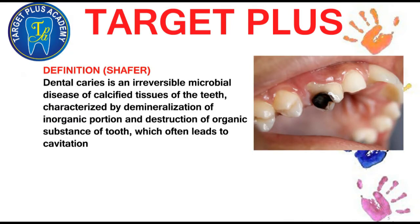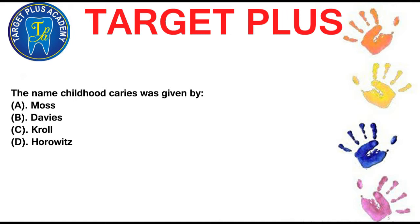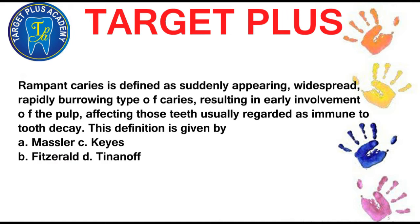Dental caries is an irreversible microbial disease of calcified tissues of teeth characterized by demineralization of the inorganic portion and destruction of the organic substance of the tooth, which leads to cavitation. Rampant caries was named by Massler. Early childhood caries by Davis. Nursing caries by Winter. Nursing bottle caries by Jacoby. The term 'childhood caries' was given by Teres. Rampant caries is defined as suddenly appearing, widespread, rapid, burrowing type of caries resulting in early involvement of the pulp affecting teeth usually regarded as immune to tooth decay — this definition is given by Massler.